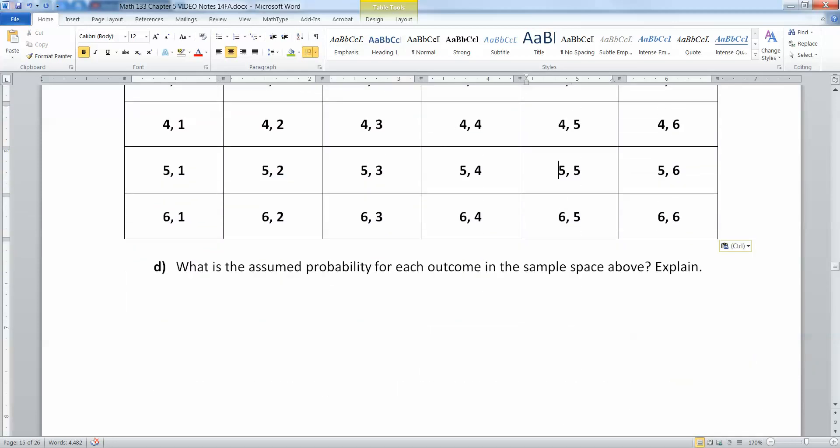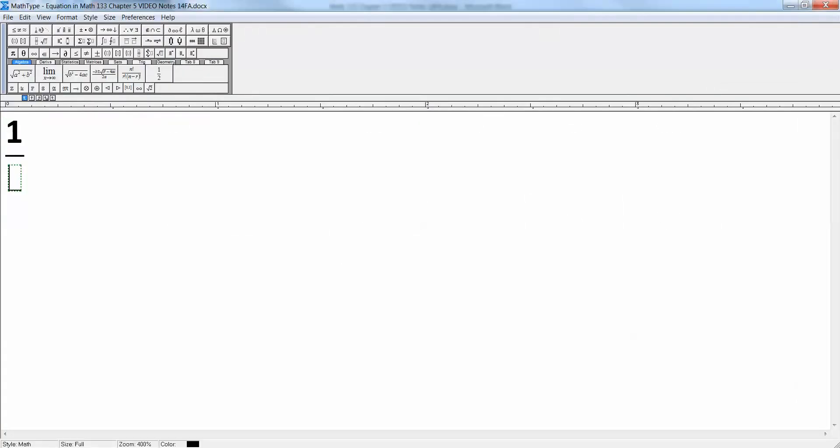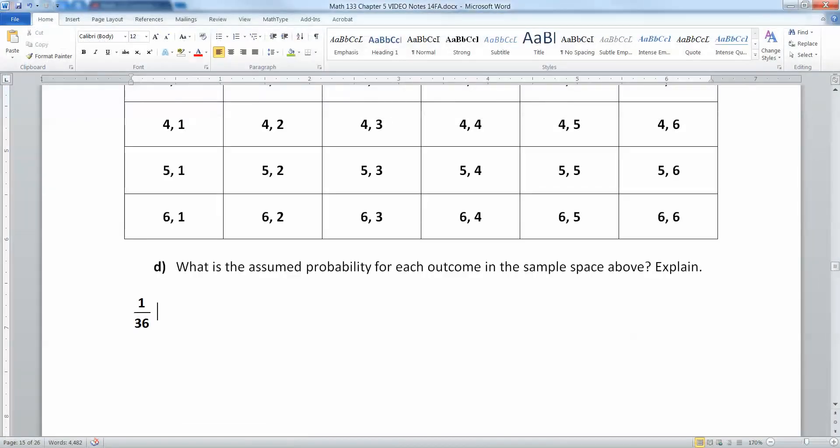Now, what is the assumed probability for each outcome in that sample space? Well, that would be one out of 36 because the dice are both fair, and each toss is equally likely.